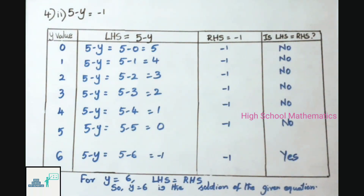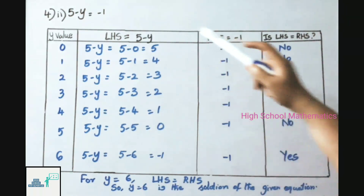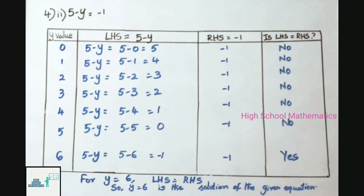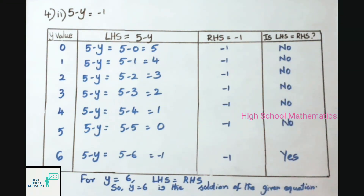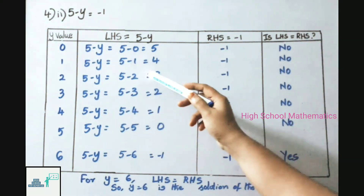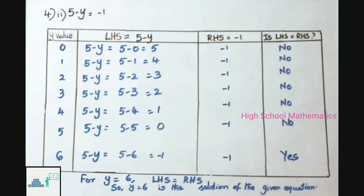Fourth question, second sum: 5 − y = −1. Tabular form: columns are y value, LHS = 5 − y, RHS = −1, and whether LHS equals RHS. For y = 0: LHS = 5 − 0 = 5; not equal to −1. For y = 1: LHS = 5 − 1 = 4; not equal to −1.